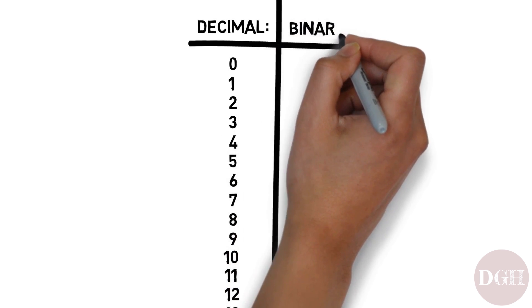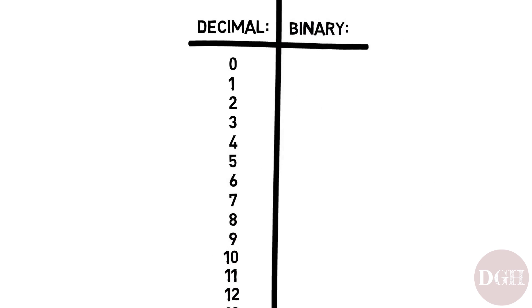Binary works in a similar way, except since we only have two numbers, 0 and 1, we have to use a whole lot more of them. Here's how it works.